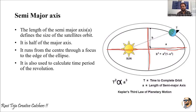The major axis is denoted by 'a' and the minor axis by 'b'. The length of the semi-major axis 'a' defines the size of the satellite orbit. The prefix 'semi' indicates half of the major axis — it runs from the center through a focus to the edge of the ellipse.